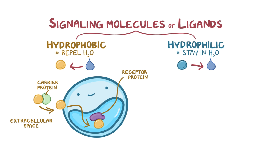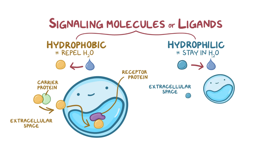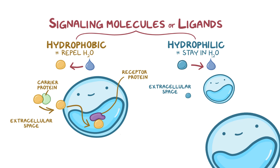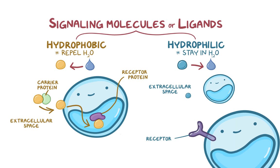Most signal molecules are hydrophilic, so they can freely float in the extracellular space to reach the target cells, but are then unable to cross the cell membrane. So to pass on the signal, hydrophilic molecules bind to receptors on the cell surface. These receptors are transmembrane proteins with an extracellular end that binds to the ligand, and an intracellular end that triggers a signaling pathway inside the cell.